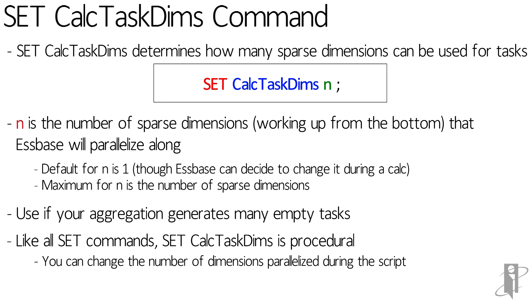You can also change CalcTaskDims within your script. For instance, at the top of your script you could use three task dimensions. Later on, if you're specifying both the scenario and the version, you might only want to use the year dimension, so you could set CalcTaskDims equal to one.